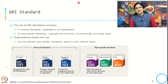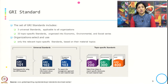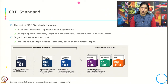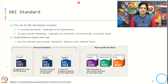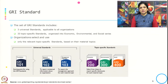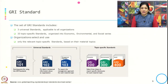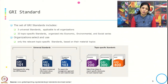The GRI standard set includes two types: three universal standards applicable to all organizations, and 33 topic-specific standards organized into economic, environment and social series. Organizations select and use only the relevant topic-specific standards based on their material topics, business, and the products or services they offer. The three universal standards are GRI 101 (Foundation), GRI 102 (General Disclosures) and GRI 103 (Management Approach).